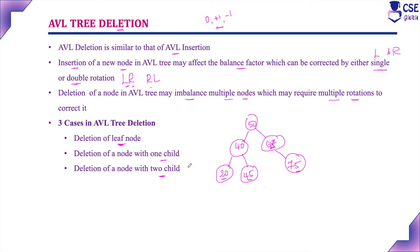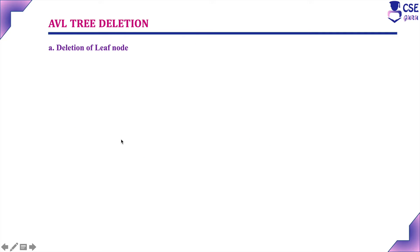Similarly, deleting a node with two children — for example deleting node 40 — the balance factor will get affected and multiple nodes will be impacted, so multiple rotations may be needed. The simplest case is deleting a leaf node, so we will discuss that first.